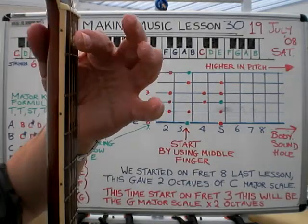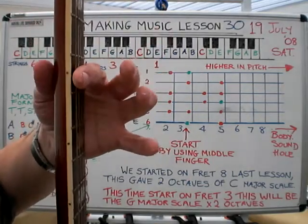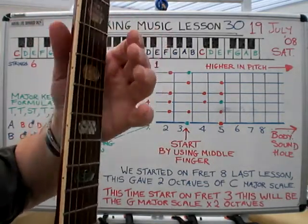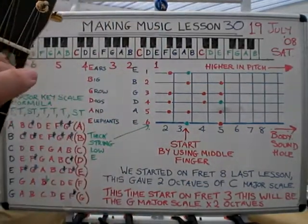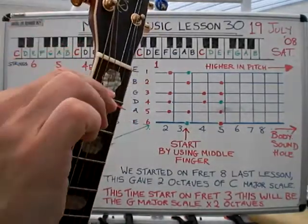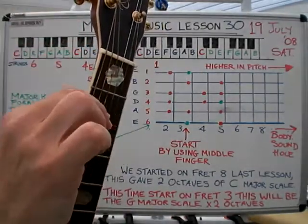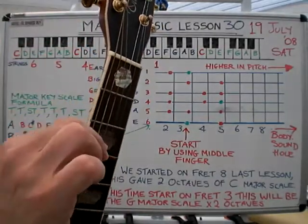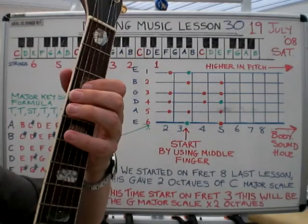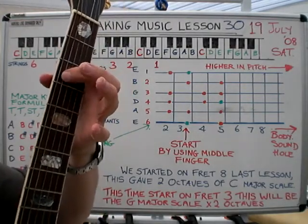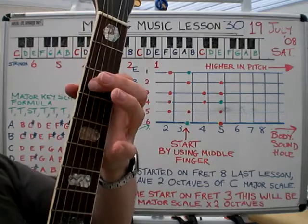For this G scale we just want to go to the third fret position. Remember: fret zero, fret one, two, three. We tend to get our fingers just behind that fret wire there.